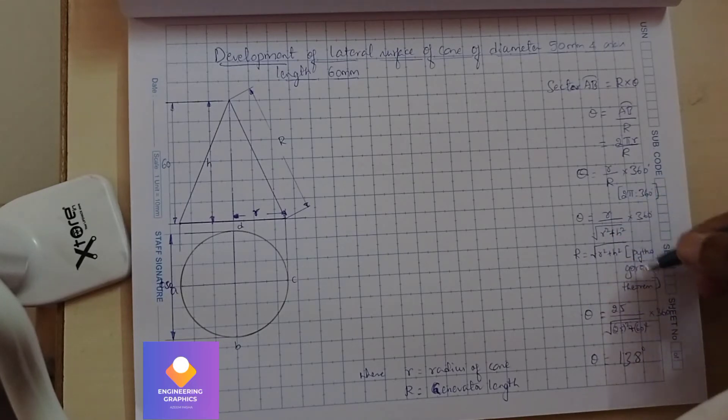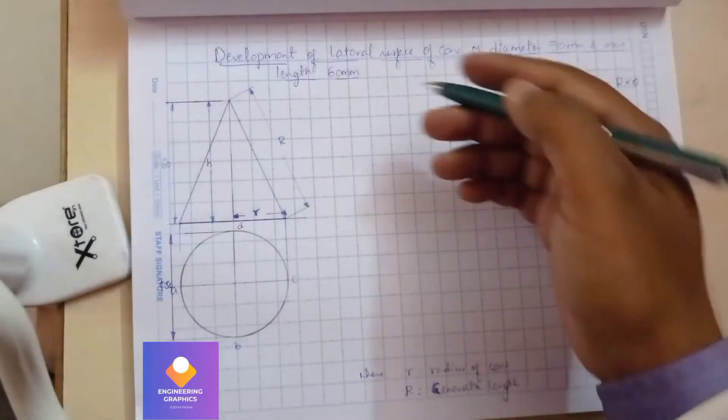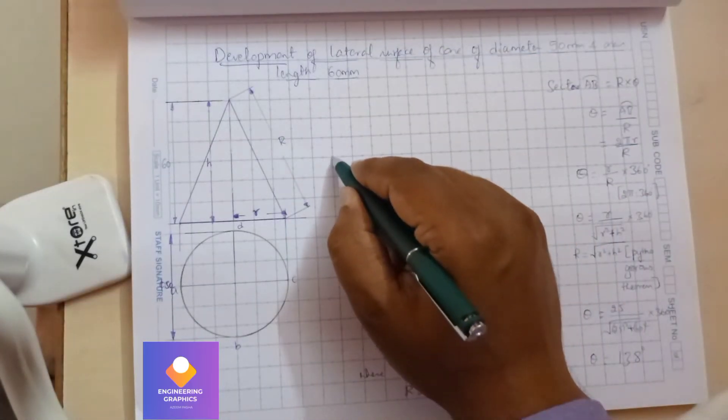Substituting the values - the r value and the h value of 60 - the angle we get is 138 degrees. First I'll take a reference point, then I'm going to measure this length.